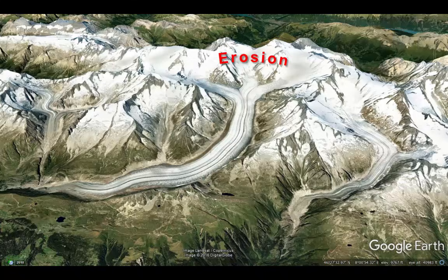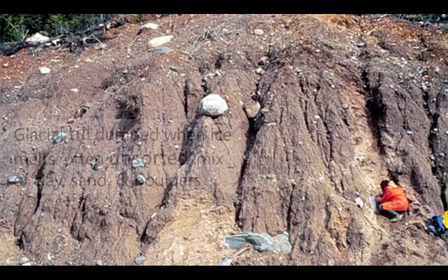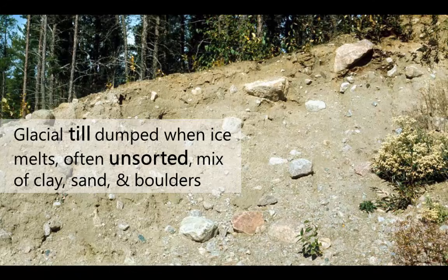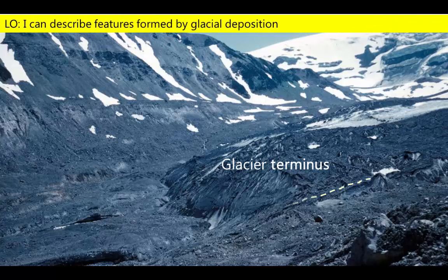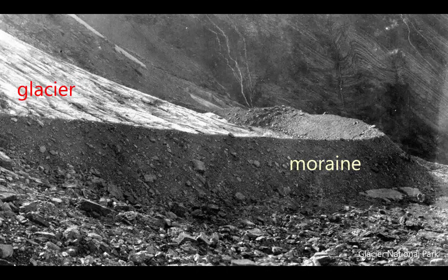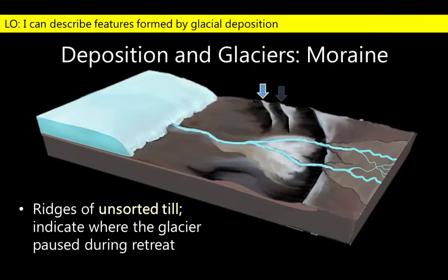Up to now we've been focusing on processes that cause erosion. Now we want to turn our attention to features formed as glaciers deposit material near their terminus. Most deposits left behind by glaciers are composed of a generally unsorted mixture of clay, silt, sand, and boulders, known as glacial till. Ice at the terminus of a glacier will melt and dump piles of till. If the position of the terminus remains stationary for some time, it can leave behind a ridge of unsorted till known as moraine. Moraines essentially define where the glacier paused, and the terminal moraine indicates how far the glacier extended during its history.